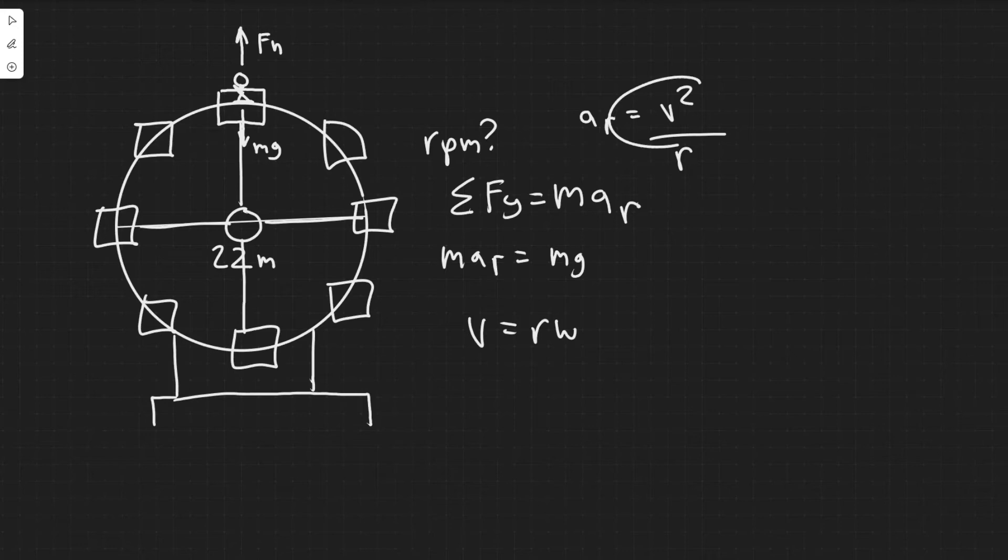So we're summing the forces in order to solve for the velocity, then we're going to convert the velocity into radians per second, and then convert the units into revolutions per minute. So hopefully that makes sense and you get an understanding of why we're actually doing this.